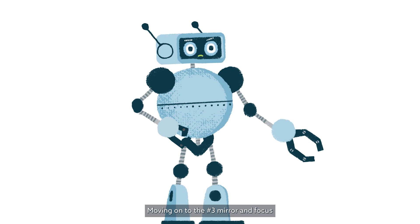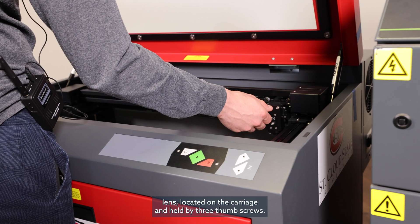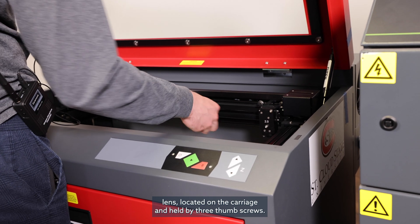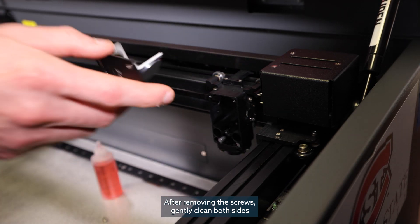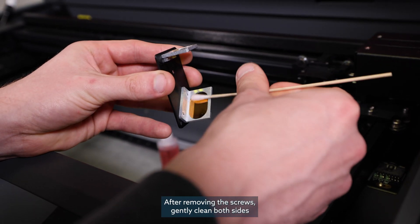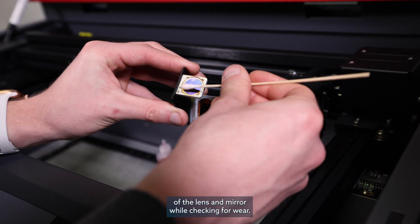Let's move on to the number three mirror and focus lens located on the carriage and held by three thumb screws. After removing the screws, gently clean both sides of the lens and mirror while checking for signs of wear.